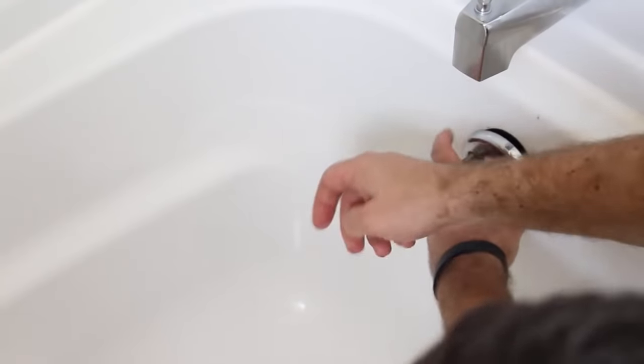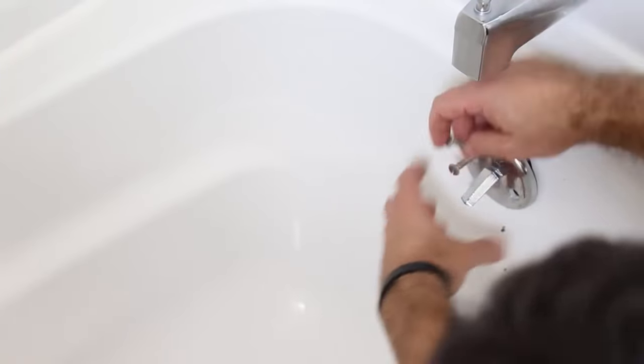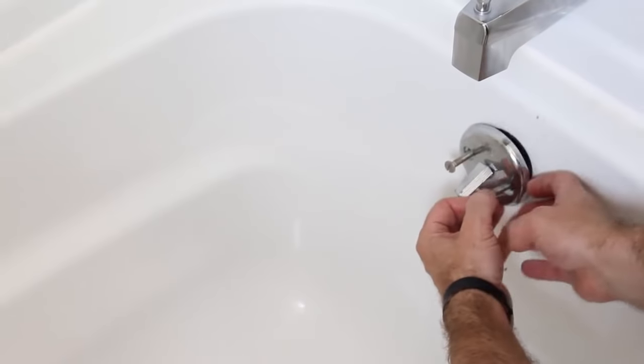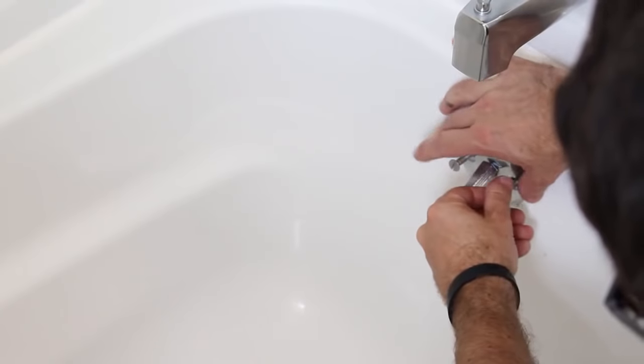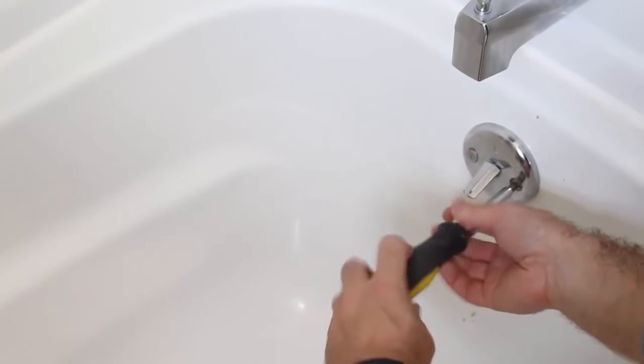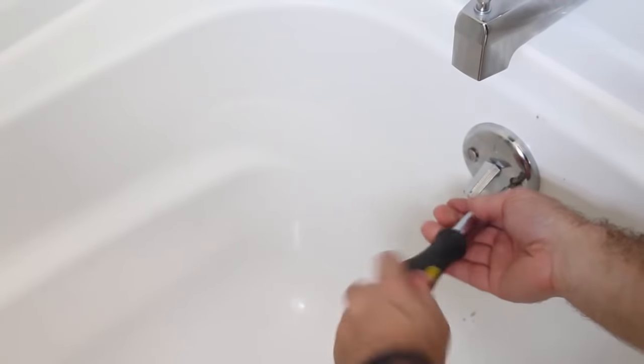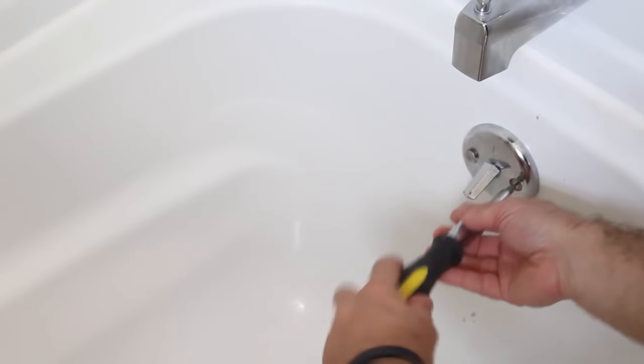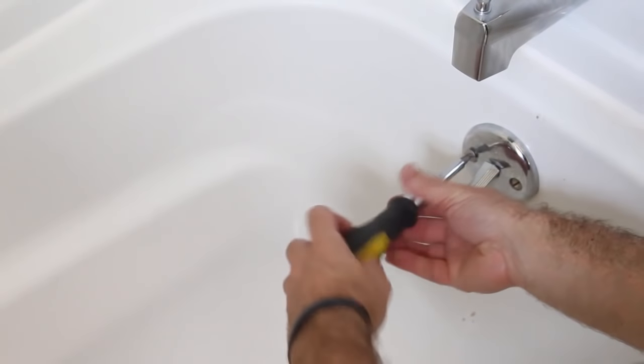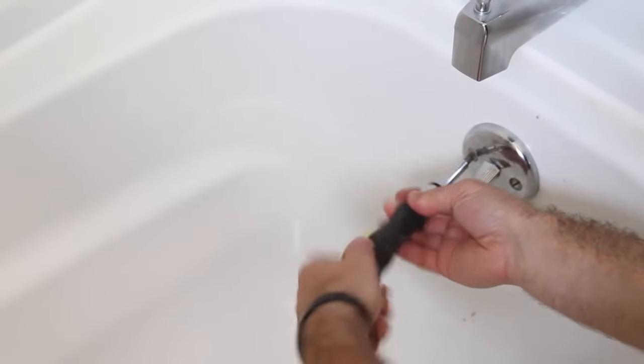So line up the screw by hand with the hole in the overflow pipe in the back. Just tighten it a little bit. Take the other screw and do the same thing. Don't over-tighten this too much—just enough to make sure that that seal is compressed.